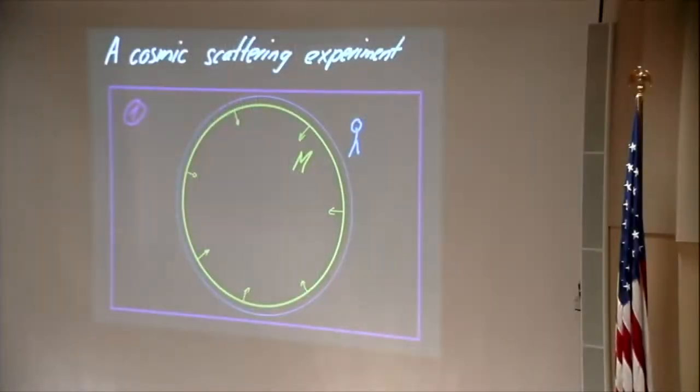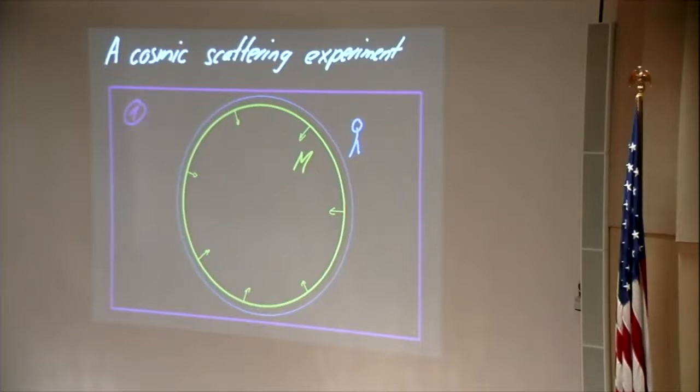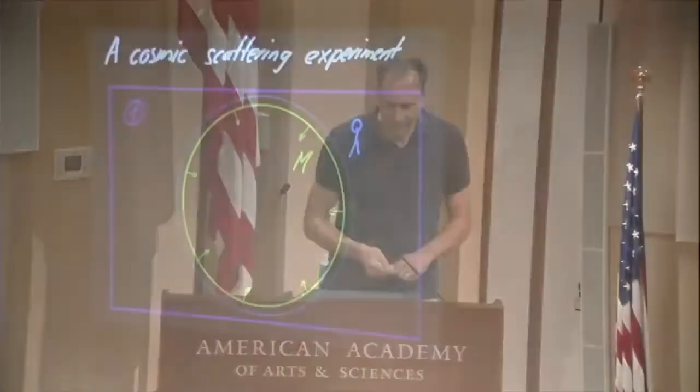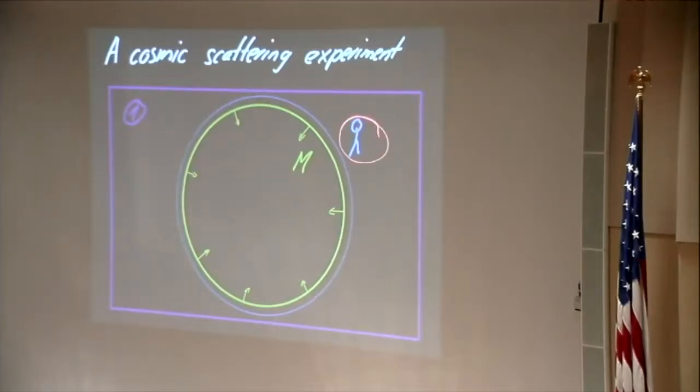I'm going to talk about an experiment one could do to test whether the evolution of a system that involves gravity, like the formation of a black hole, is unitary. The experiment is maybe not so easy to do in practice — this is one where even Misha Lupin would still have to work on for a few years — but it would be very interesting to do, which is create a big shell of mass, spherically symmetric, and then collapse it. I have a sequence of four pictures, and I imagine here that we have an observer outside who controls the whole shell.